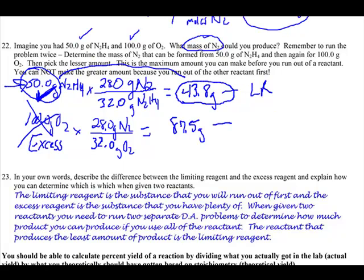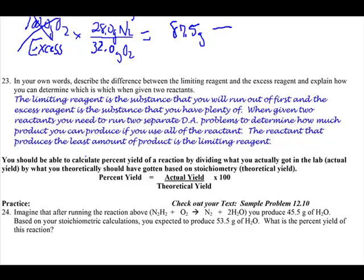And then 23 goes hand-in-hand with this question. It says, in your own words, describe the difference between the limiting and the excess reagent. The limiting reagent is the substance that you run out of first.